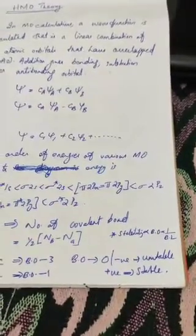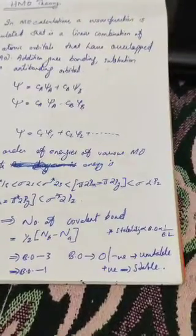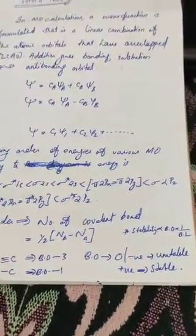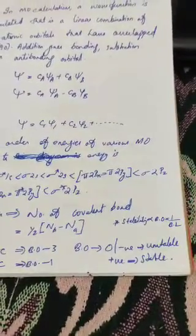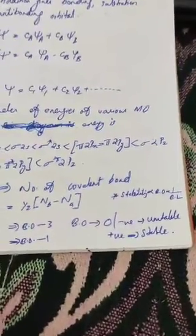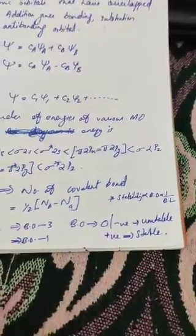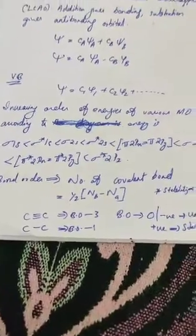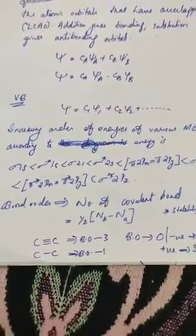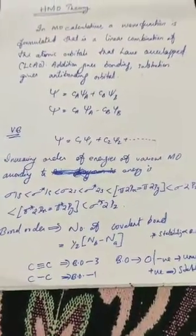For example, for H2 the bond order is 1, so it is found to be stable, while in the case of helium the bond order is zero, so the helium molecule does not exist. MO theory has very successfully explained different types of bonding in molecules. Bond order is directly proportional to stability and inversely proportional to bond length. For C triple bond C the bond order is 3, and for C single bond C the bond order is 1. Bond order is one of the most important parameters to define the type of bonding in a molecule.